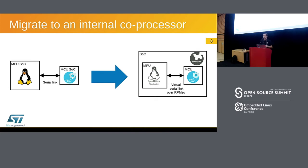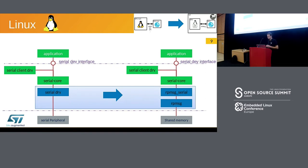Let's focus first on migration from a multi-SOC solution to a multi-processor SOC solution. On the Linux side, the solution based on a serial link needs to preserve the API offered to the application or client driver. The solution is to implement a virtual driver over RPMessage. This driver is platform-independent and could be generic. Several companies have already implemented this kind of driver, and with it you can simulate a serial link and offer the same API to the application.